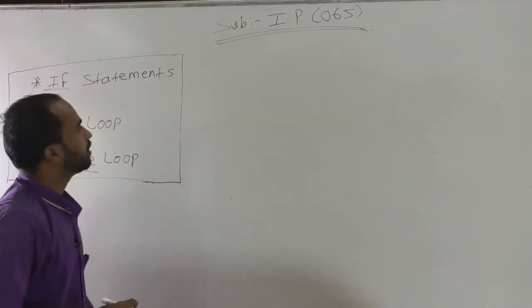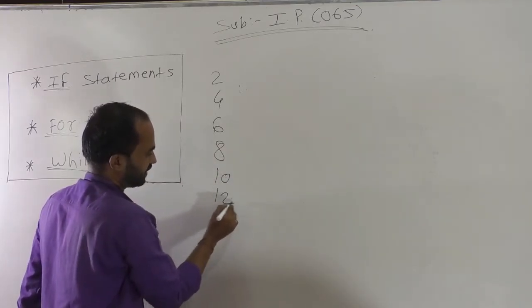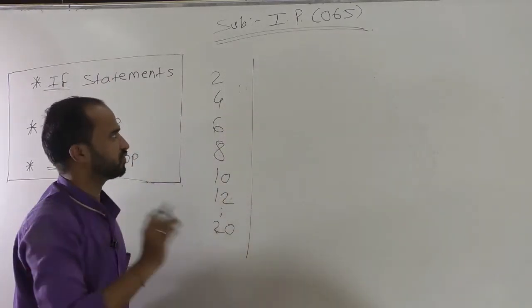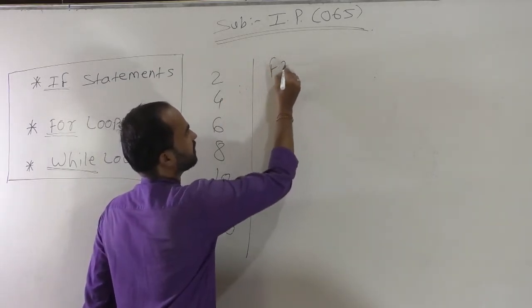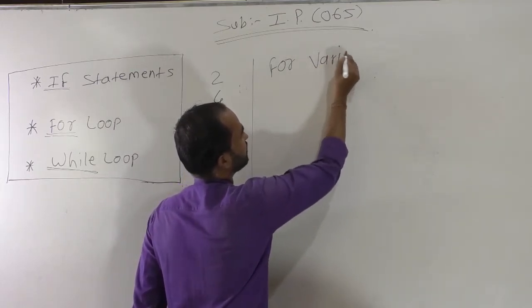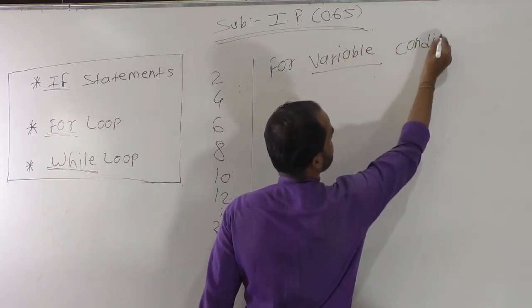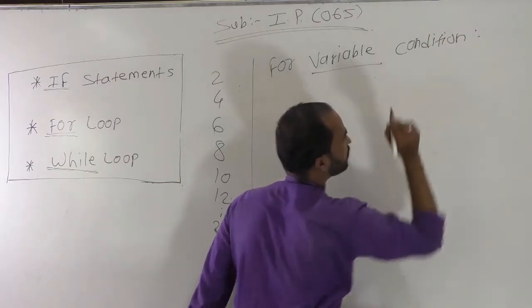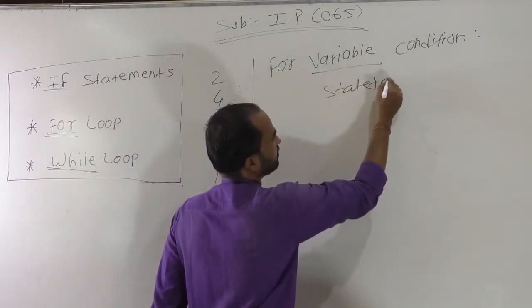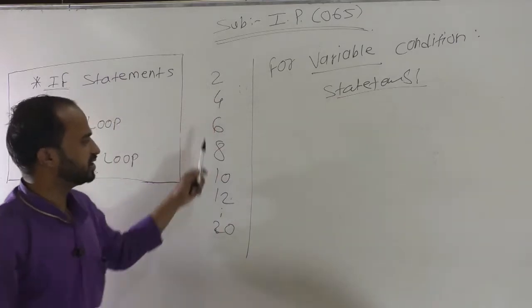The next point is about the for loop. For loop means iteration. Suppose I want to display the table of 2: 2, 4, 6, 8, 10, 12 up to 20. What is the syntax of the for loop? You write 'for', then a variable like i, then a condition, then a colon — which again indicates a compound statement — and the following statements are part of the for loop.